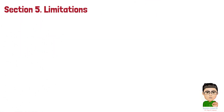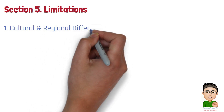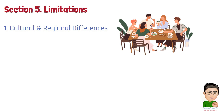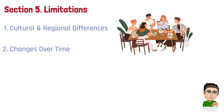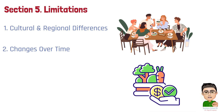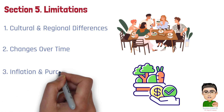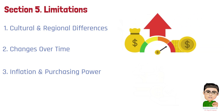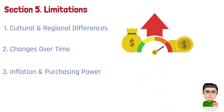Section 5: Limitations. While the Engel Coefficient is a valuable tool, it has the following limitations. Number 1: Cultural and Regional Differences. It does not account for cultural and regional variations in dietary habits and cost of living. In some cultures, food is a significant part of the social fabric and may be allocated a larger share of the budget regardless of income level. Number 2: Changes Over Time. The coefficient may not be stable over time as consumption patterns evolve. For example, advancements in food technology and distribution may cause people to spend less on food as a proportion of income. Number 3: Inflation and Purchasing Power. If food prices increase disproportionately compared to other goods, the coefficient may rise even if the actual standard of living remains the same.